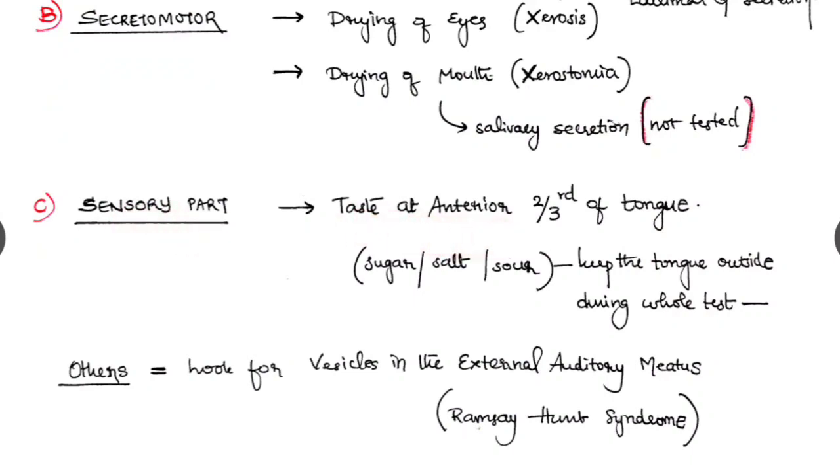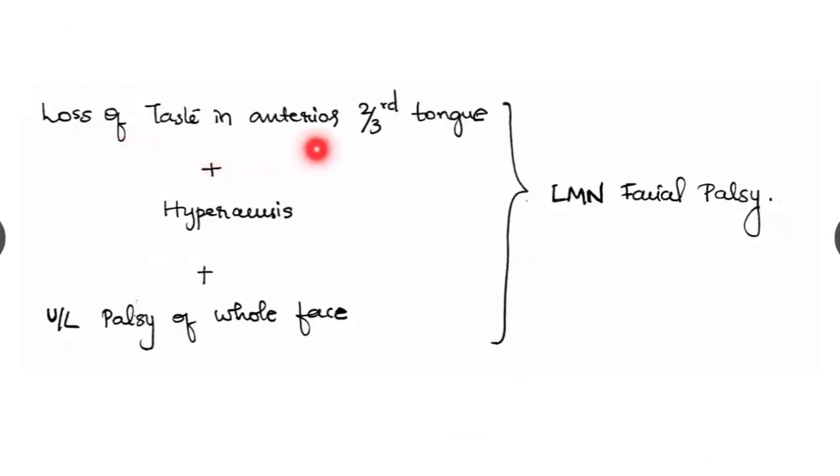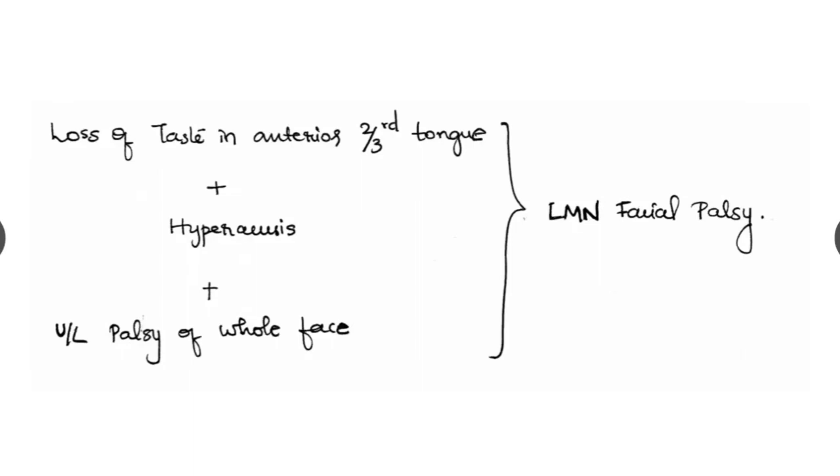Sensory part. Taste at the anterior two-thirds of the tongue we are testing. With sugar, salt or sour solution. And important point is that we have to ask the patient to keep his tongue outside during the whole test. Other test we look for vesicles in the external auditory meatus. It is seen in Ramsay Hunt syndrome. If there is a loss of taste in the anterior two-thirds of the tongue with hyperacusis and unilateral palsy of the whole face, it is the lower motor neuron facial palsy. The lower motor neuron facial palsy we have discussed in our hemiplegia video.